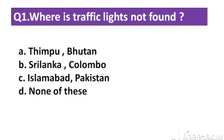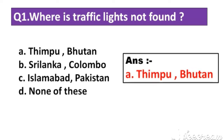Question number 1: Where are traffic lights not found? Option A: Thimphu in Bhutan. Option B: Colombo in Sri Lanka. Option C: Islamabad in Pakistan. Option D: None of these. The right answer is Option A: Thimphu in Bhutan.